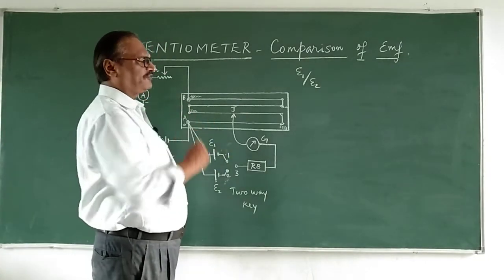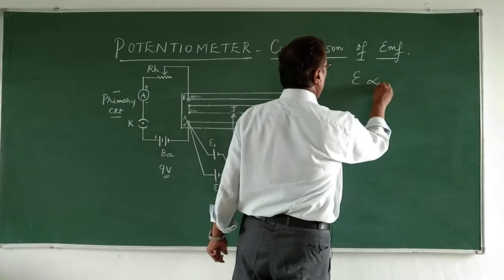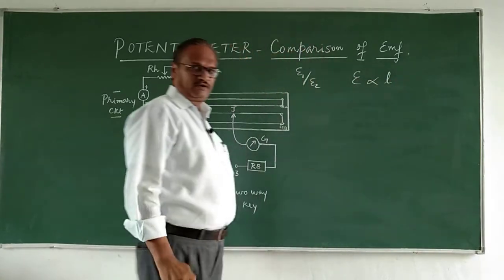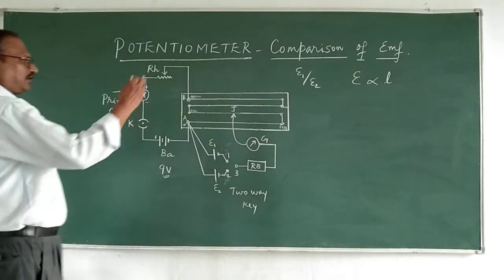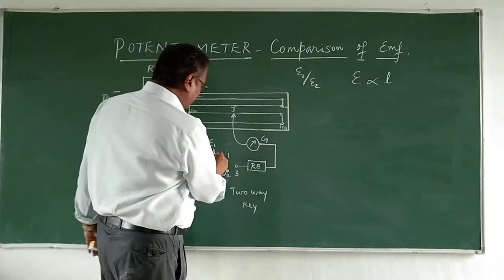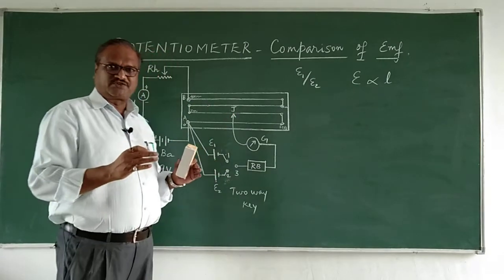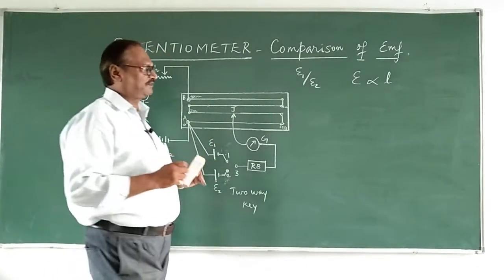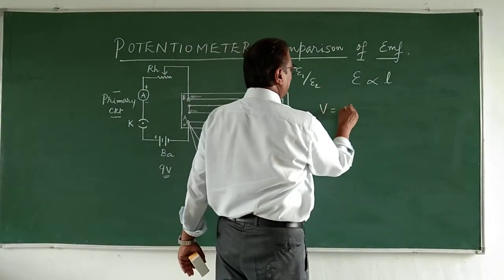Now I am going to compare the EMF. I want to state that EMF is proportional to length. We should find out how EMF is proportional to length, that means the current which is flowing through is proportional to length. Some factor has to remain constant. From Ohm's law, V is equal to R into I.